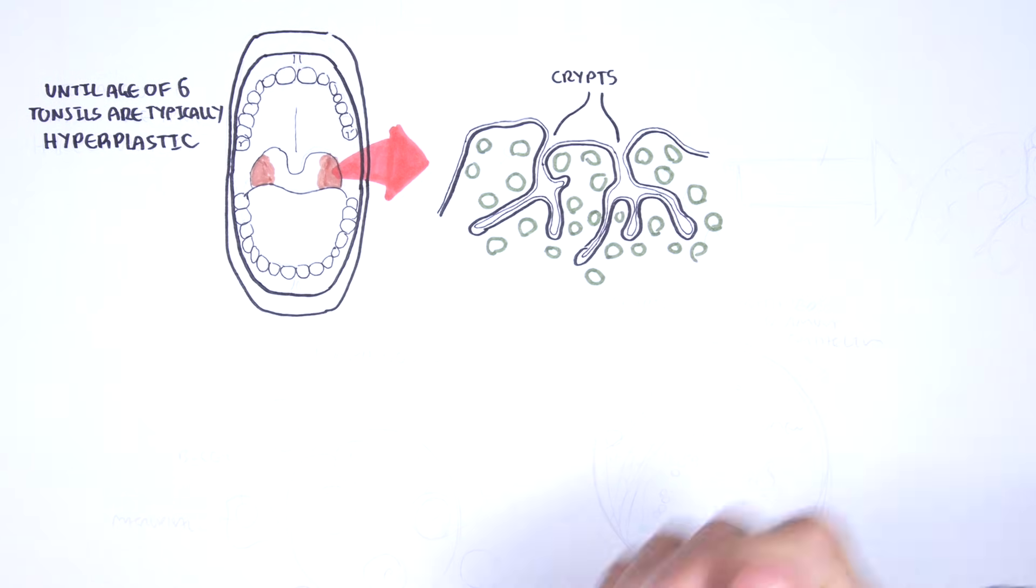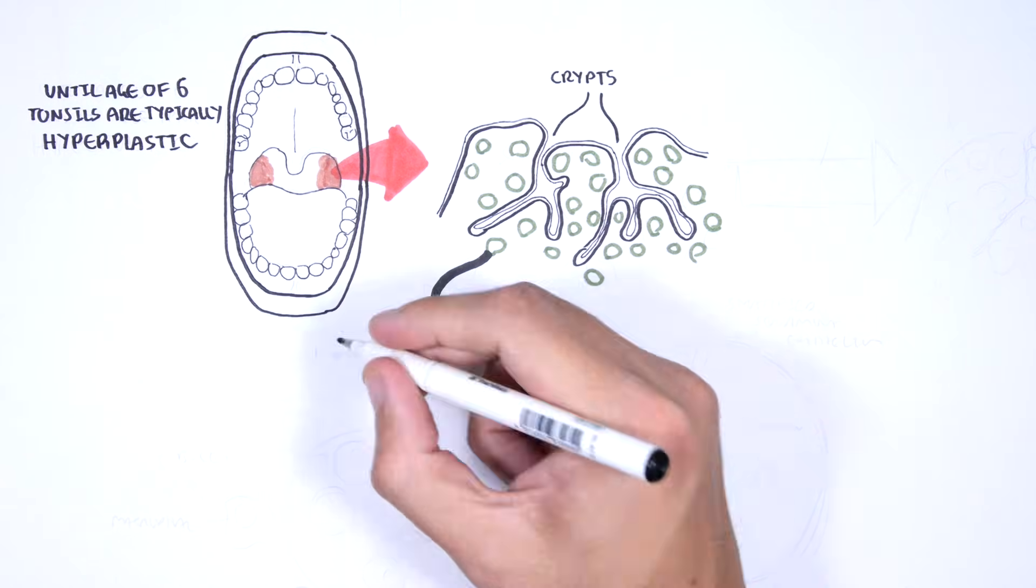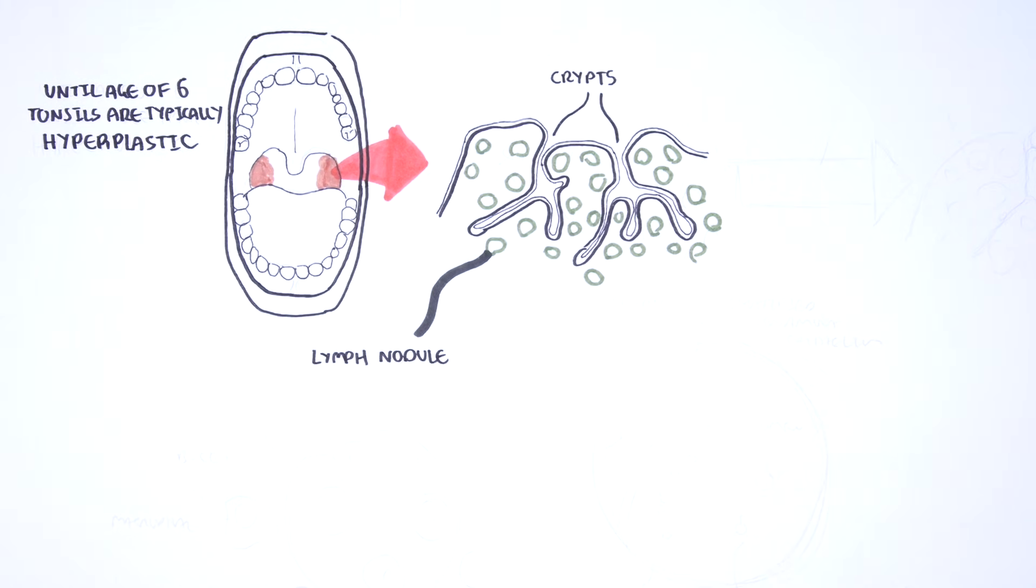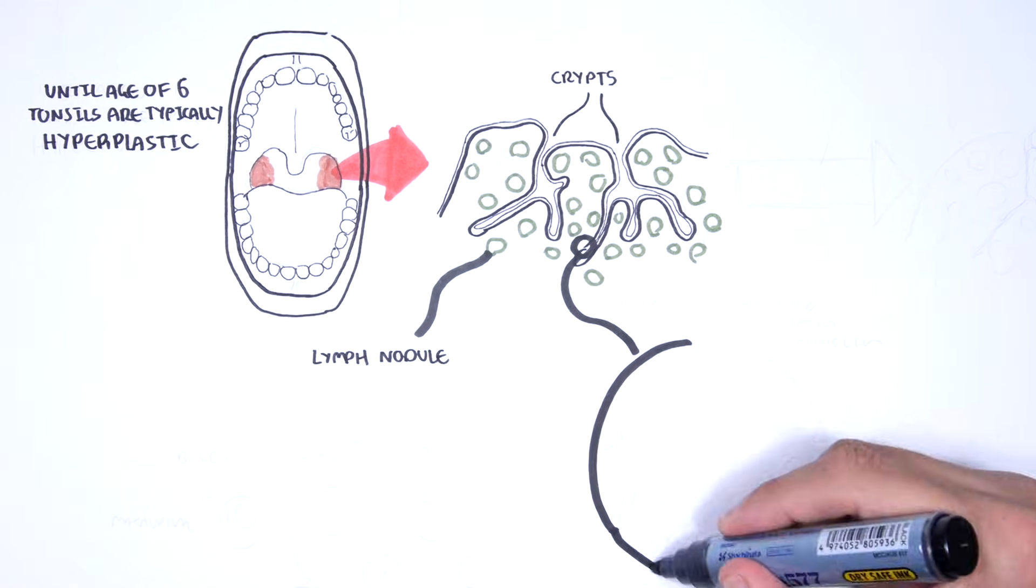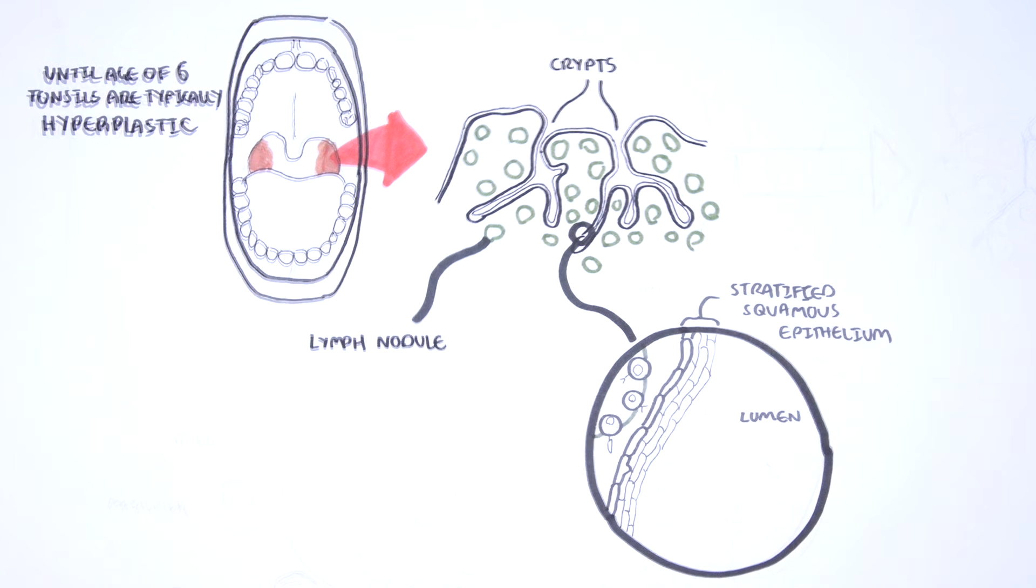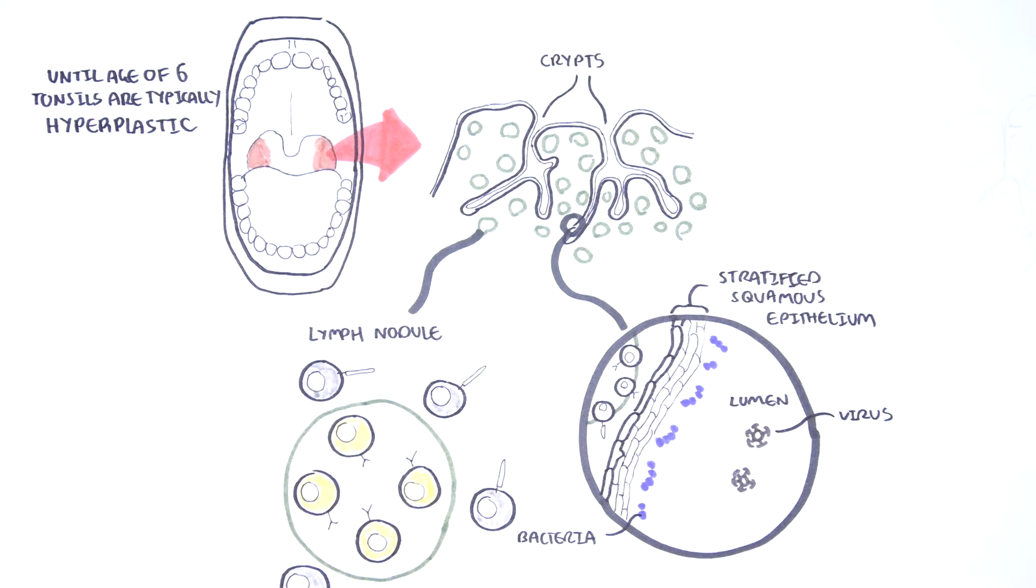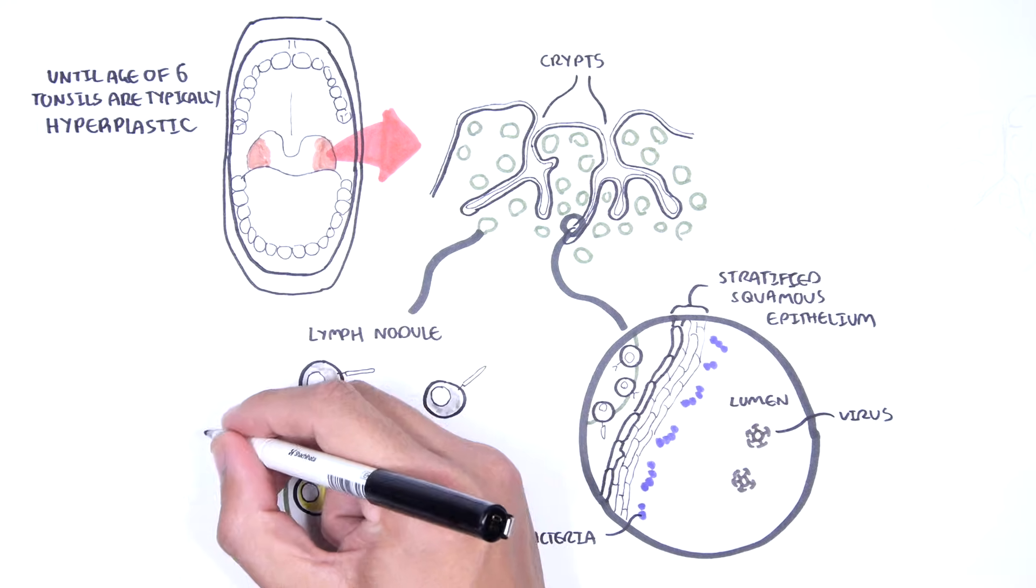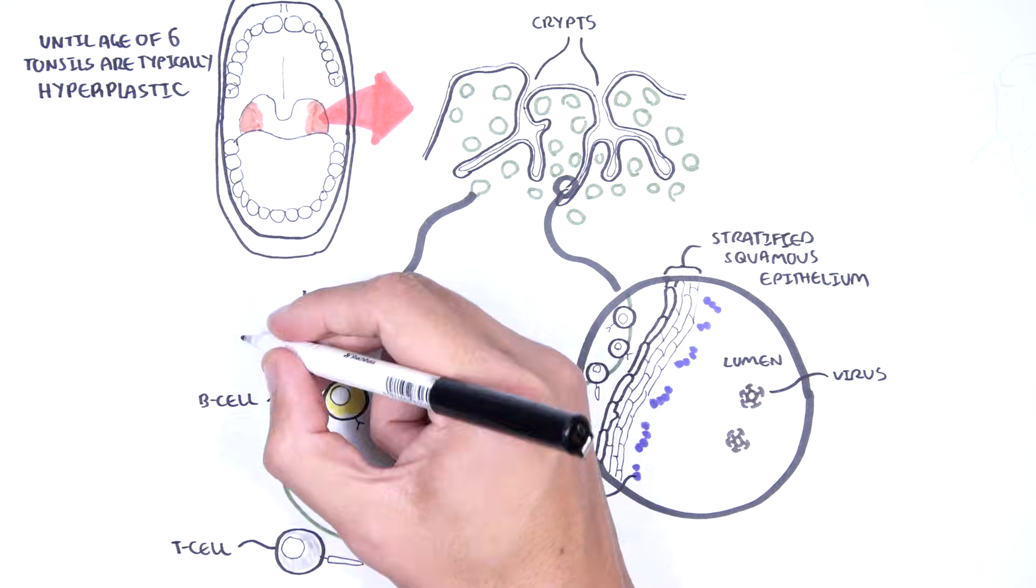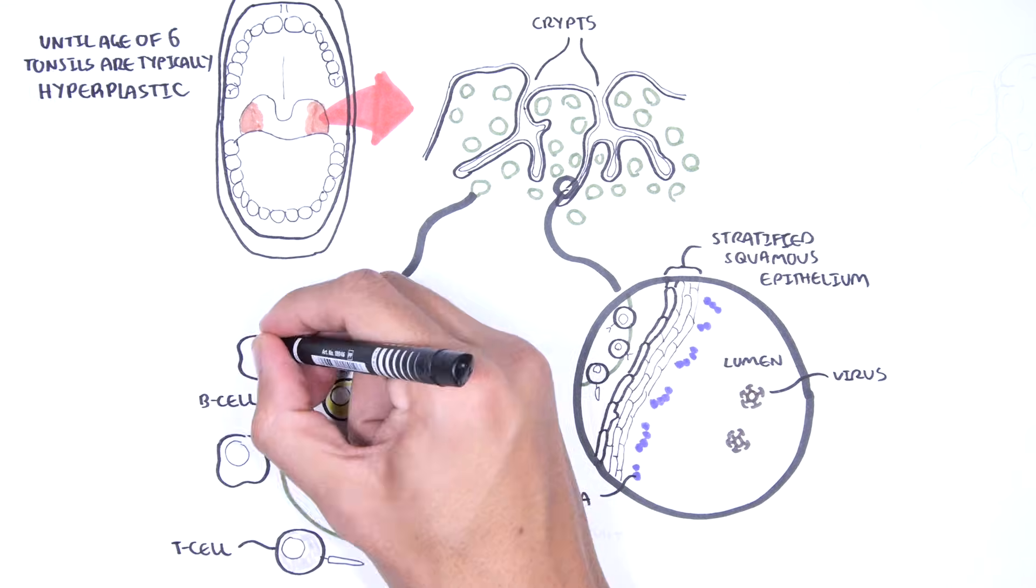Zooming into the tonsils we can see they have deep crypts and lymph nodules. The crypts are normally colonized by many species of bacteria and also exposed to many viral organisms. Then you have lymph nodules which contain immune cells that are your T cells, B cells, and macrophages.